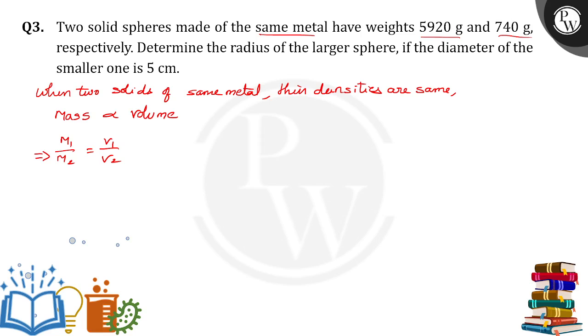M1 by M2 is V1 by V2. V1 is volume of solid sphere 1. V2 is nothing but volume of solid sphere 2, which is nothing but 590 by 740 grams.